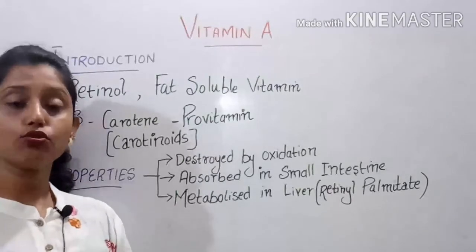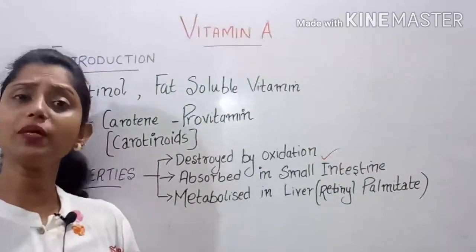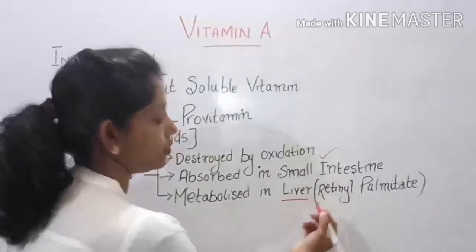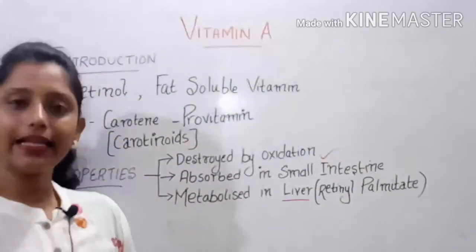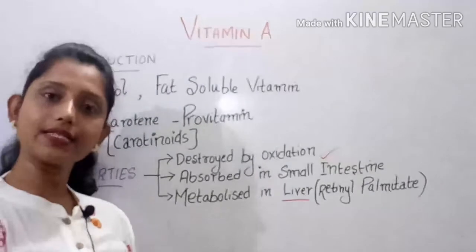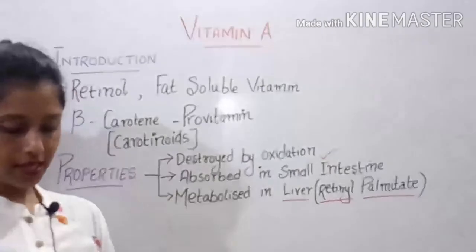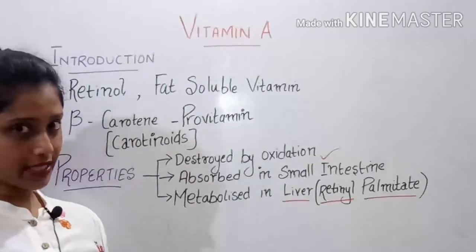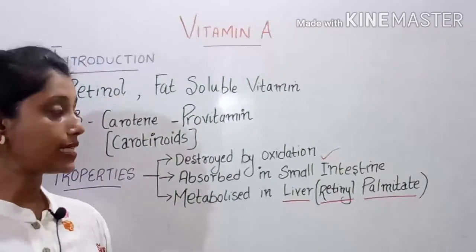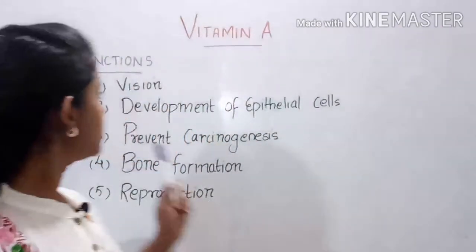The absorption of Vitamin A usually happens in the small intestine. The metabolism of Vitamin A happens in the liver. Once it is metabolized, it is again stored inside the liver in the form of retinyl palmitate.